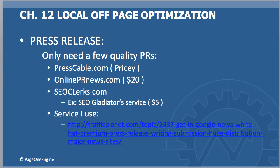For press releases, you only need a few quality press releases for your whole campaign. I use presscable.com — it's a bit pricey but really good for syndication. If you have an average budget, go ahead and use onlineprnews.com — just pick their social media plan, which I think is $22. On seoclerks.com, type 'press release' and you'll get a whole list of vendors. I like this guy SEO Gladiator — he does a good job and it's only five bucks. There are also other press releases out there for about $50 to $60.